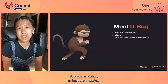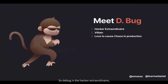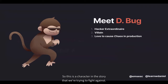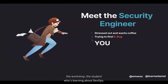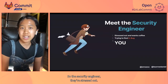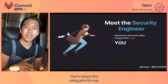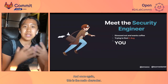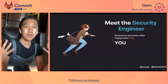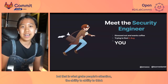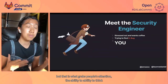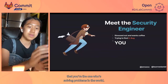For our workshop, we have two characters. The first one is Debug — the hacker extraordinaire. They're the villain and Debug loves to cause chaos in production. This is the character in the story we're trying to fight against. Second, meet the security engineer — this is going to be you, the person playing the workshop, the student learning about DevOps. The security engineer is stressed out, wants coffee, and is trying to find and stop Debug. This is the main character — this is you. We humans are very inclined to think that we're the main character. It may sound narcissistic, but that is what grabs people's attention: the ability to think that you're the one solving problems in the world.